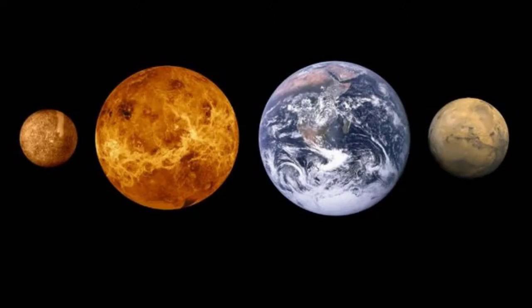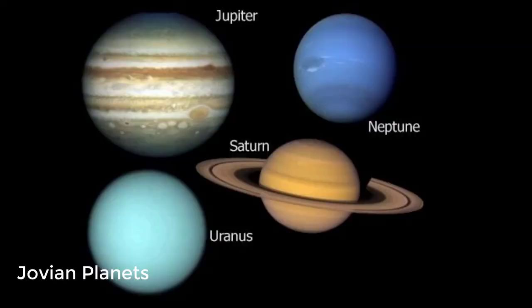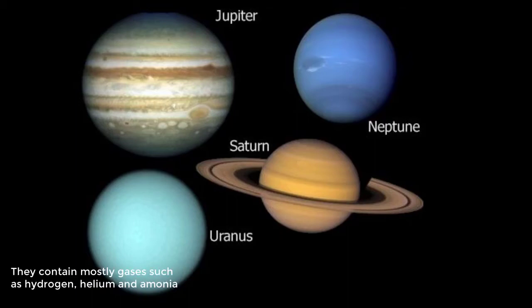The first four of the eight planets are referred to as terrestrial planets because they have rocky surfaces. The last four are sometimes called Jovian planets due to their size relative to the terrestrial planets. They contain mostly gases such as hydrogen, helium and ammonia.